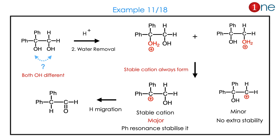Let us look at the next question. This is an asymmetrical diol — both OH groups are different. How will the reaction proceed? The reaction proceeds to form the stable cation. The stable cation is on the phenyl side and is the major one, stabilized by phenyl resonance. So hydrogen migration occurs and the final product is the ketone. The intermediate always forms as a stable cation.